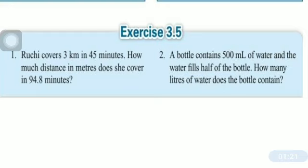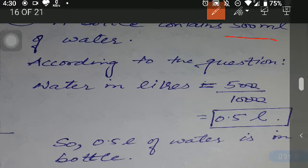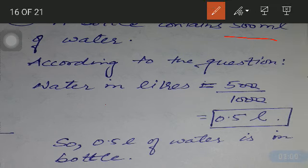According to the question, we have to find the answer in liters — how many liters of water are present in the bottle. Simply convert the quantity of water, that is 500 ml, into liters by dividing it by 1000. It comes out to be 0.5 liters. So 0.5 liters of water is in the bottle.